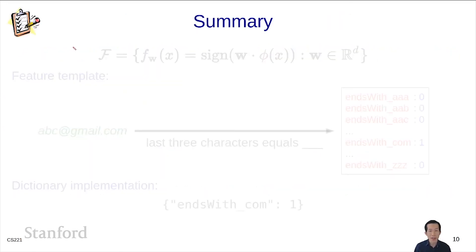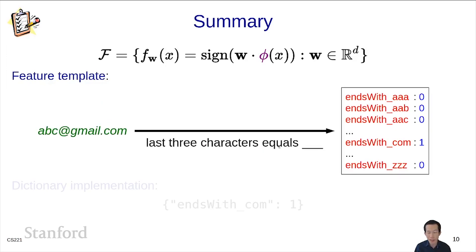To summarize, we want to identify hypothesis classes. In this case, we're looking at defining the hypothesis class with respect to the feature extractor. To define the feature extractor, we use feature templates, which is a convenient shorthand for unrolling a single feature template into a bunch of different features. We also saw that in some cases, the feature vectors were sparse, and therefore you can use a dictionary implementation to be more efficient. Okay, so that's the end of this module. Thanks.